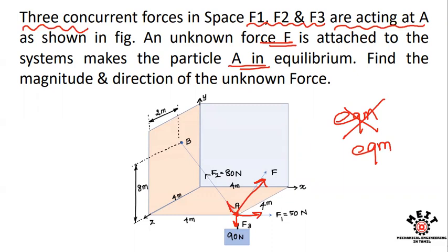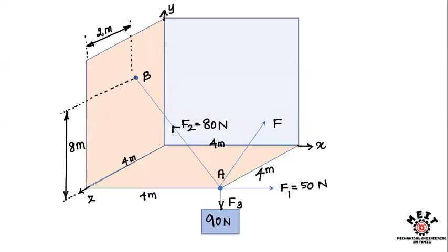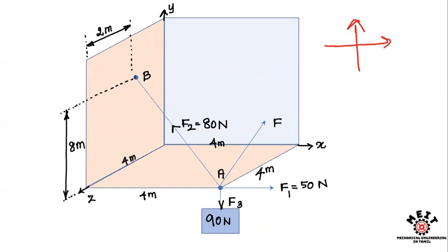If you look at the diagram, X, Y, and Z are in three planes. Looking at the axes, the X-axis and Y-axis are two perpendicular axes, and the Z-axis goes in the downward direction.